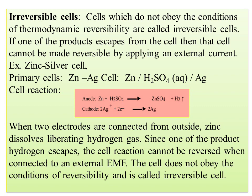When two electrodes are connected from outside, zinc dissolves, liberating hydrogen gas. Since one of the products — hydrogen — escapes, the cell reaction cannot be reversed when connected to an external EMF. The cell does not obey the conditions of reversibility and is called an irreversible cell.